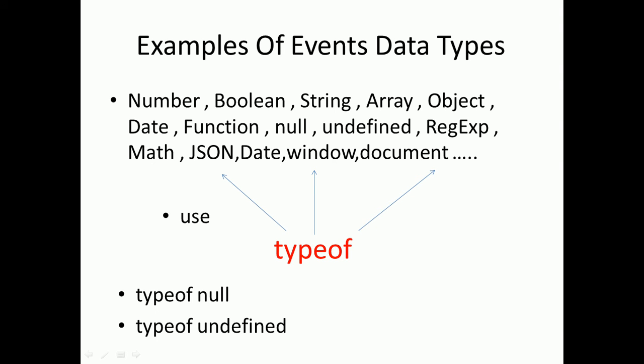We have the base thing in JavaScript is event data types. We have many data types, even data types including number, boolean, string, array, object, date, function, null, undefined, regular expressions, math, JSON, date, window, document, element and so forth. All these are called event data types.